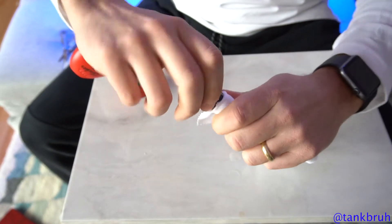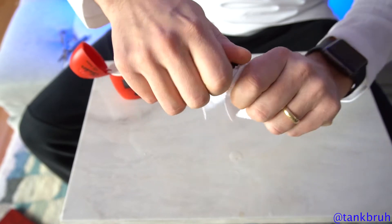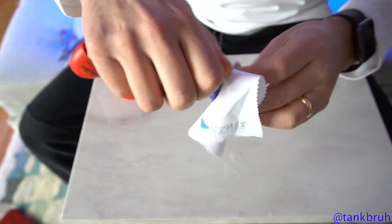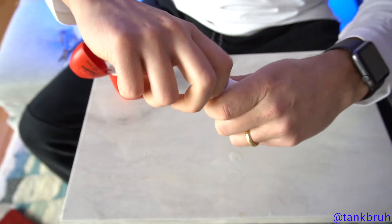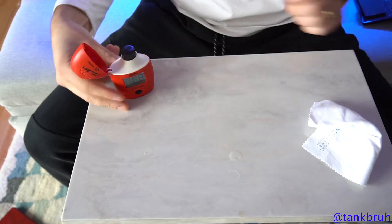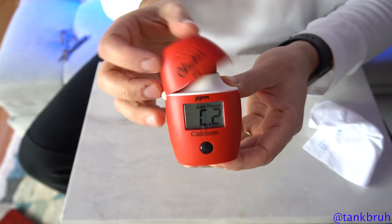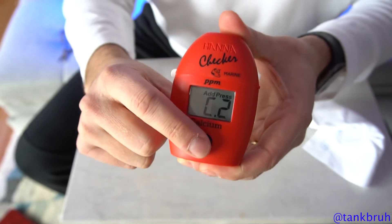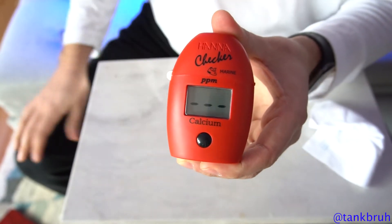You want it free of any sort of fingerprint residue or anything else that you might be left over from the cloth. Then you just drop her back into the slot. Go ahead and shut it. Press the button and just wait.